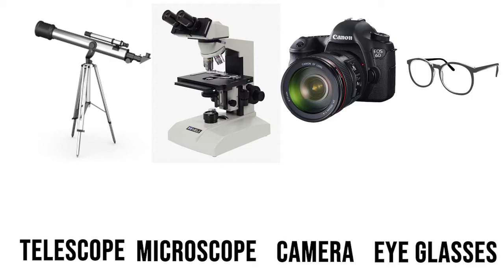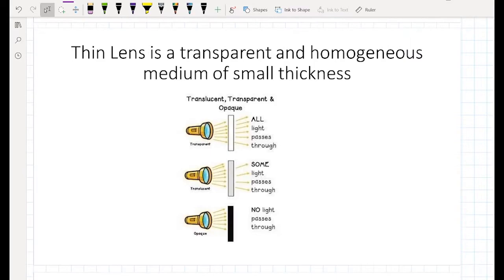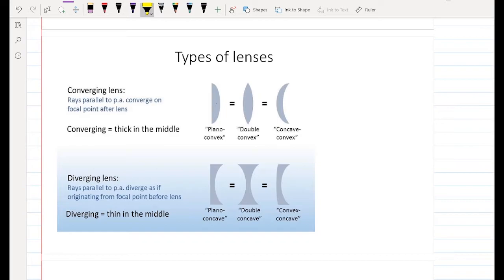A thin lens is a transparent and homogeneous medium of small thickness. It is transparent because all light passes through a transparent medium, while no light passes through an opaque medium. Some media are translucent, where some light passes through.